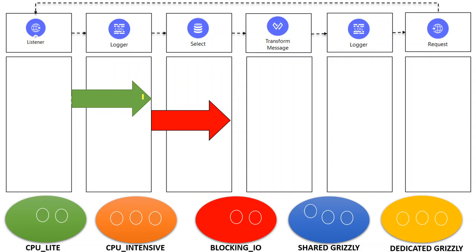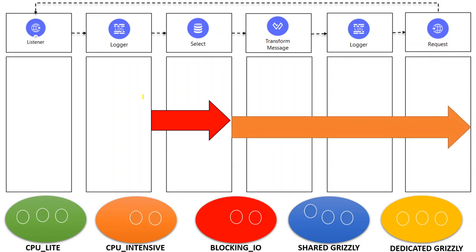Once the Logger task begins, the listener's Grizzly thread is sent back to its pool. For the database Select operation, Blocking I/O comes into picture and takes responsibility for executing that task. Every thread pool is backed by its own scheduler. Once the Select completes the Blocking I/O thread goes back to the pool. Then for the DataWeave Transform, the thread switches to CPU Intensive.